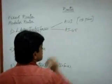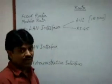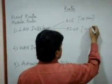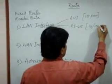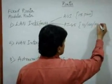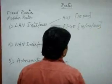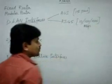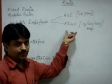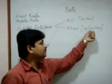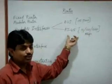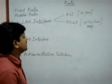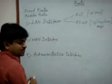The RJ45 port supports different bandwidths: 10 Mbps, 100 Mbps, and 1000 Mbps. A 10 Mbps port is called an Ethernet port, a 100 Mbps port is called a Fast Ethernet port, and a 1000 Mbps port is called a Gigabit Ethernet port. All of these are for LAN connectivity.